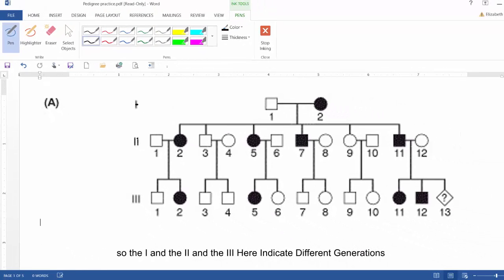So the one and the two and the three here indicate different generations. So one would be grandparents, two their children or the parents, and then three their children, so grandparents, parents, and children.